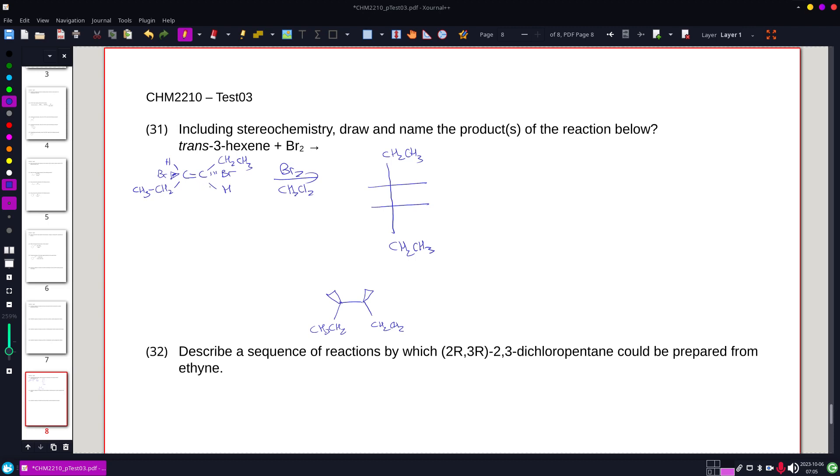So what I have to do is kind of rotate this in my mind and realize that the bromines, even though they're anti, on a Fischer diagram, they end up drawing the same because I have to rotate this side to get the CH2s, CH3s both in the right location. All right.